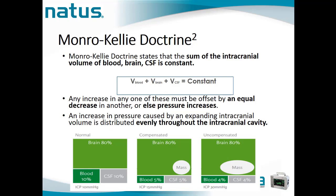Here are some examples. In normal circumstances: 80% brain, 10% blood, 10% CSF, and the ICP is inside the normal range — 10 mmHg. In the middle example, there is a mass occupying lesion, and the blood and CSF get shunted out. The brain is compensating, and the ICP is just mildly increased — 15 mmHg.